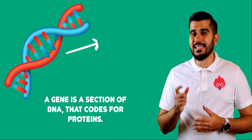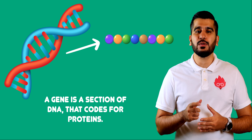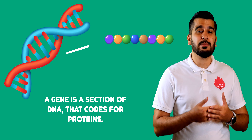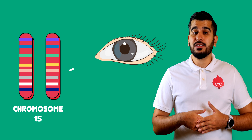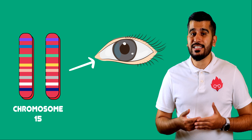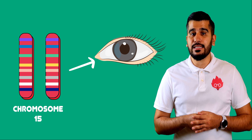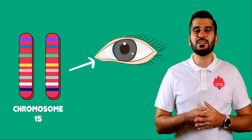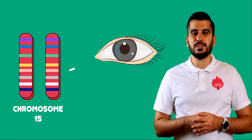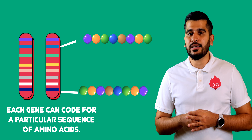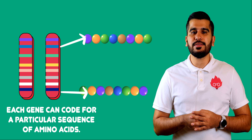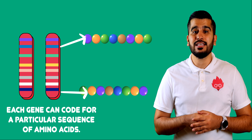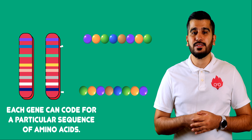A gene is a section of a molecule of DNA that codes for a specific protein. For example, eight genes have been identified as impacting eye colour, which are located on the 15th chromosome. Each gene can code for a specific sequence of amino acids, forming different proteins in organisms.